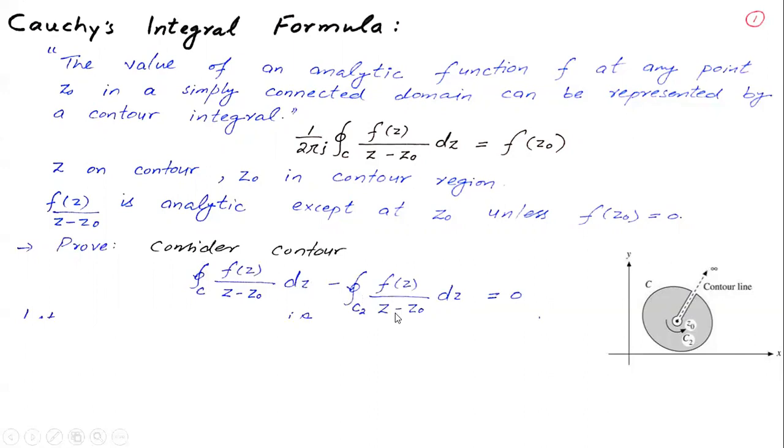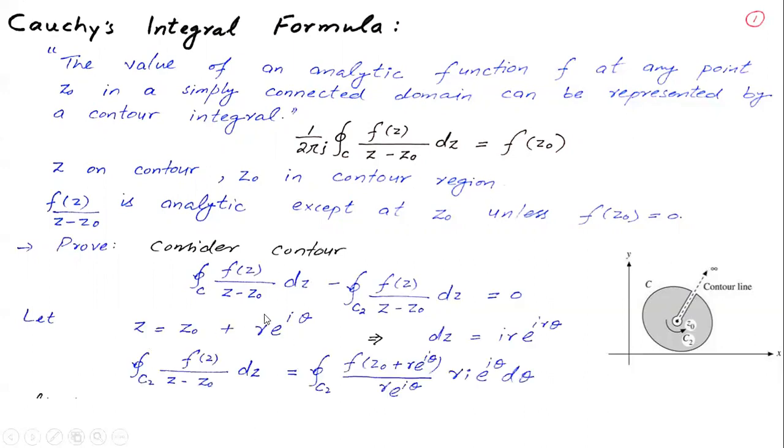We have seen this in the last lecture. Now, I have taken this circle with z0 as origin, at radius r from z0, with points on the circle at z = z0 + r*e^(iθ).